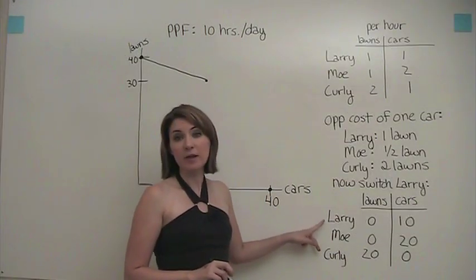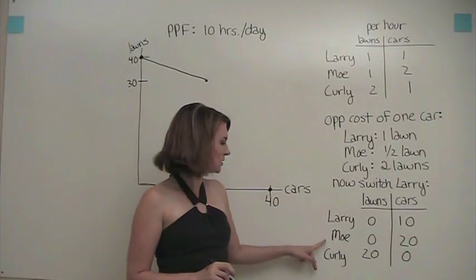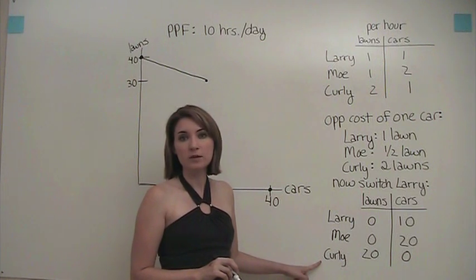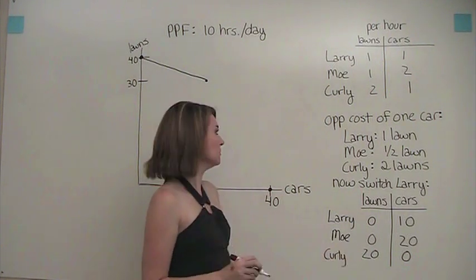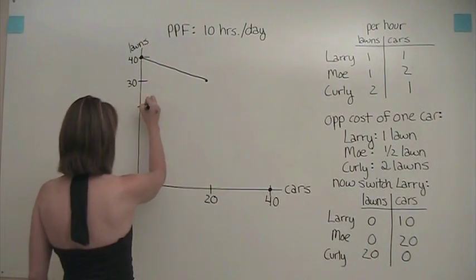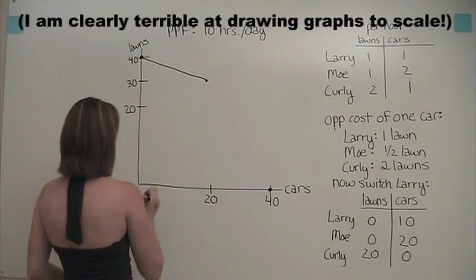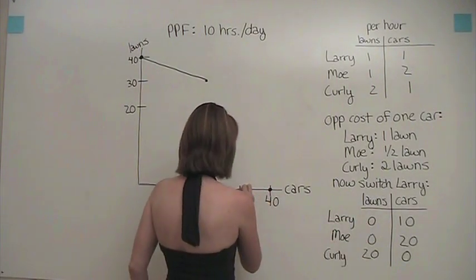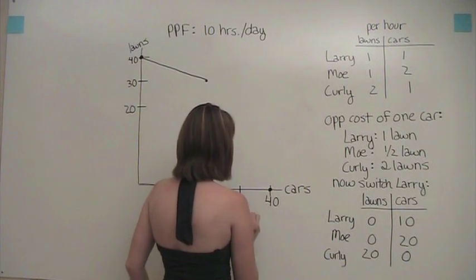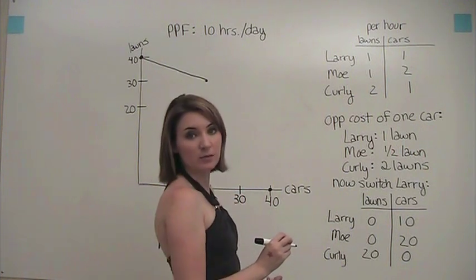Now we have both Larry and Moe switched over to washing cars, and Curly is the only guy left still mowing lawns. We can see with this setup that now we have 20 lawns being mowed and 30 cars being washed. So we get a point approximately here.